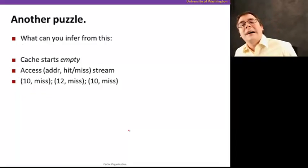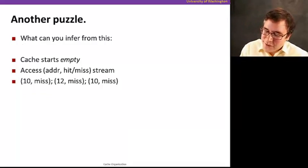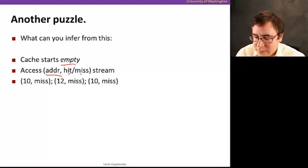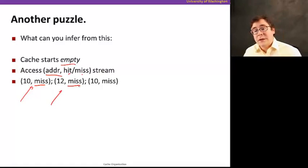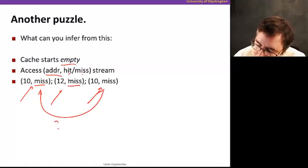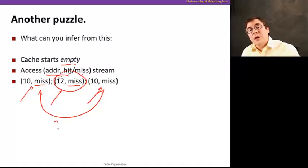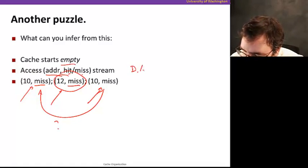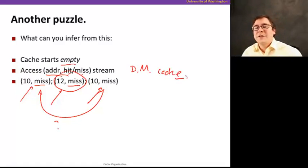Let's end with another puzzle. Suppose the cache starts empty. I access address 10 — miss. I access address 12 — miss. Then I access address 10 again — miss. Since I just accessed 10, why is it a miss? Accessing 12 must have kicked out 10, meaning 10 and 12 map to the same set. But since the cache was empty when 12 was accessed, there was no other data to evict — so this must be a direct-mapped cache. Have fun with this, and have fun with the assignments!